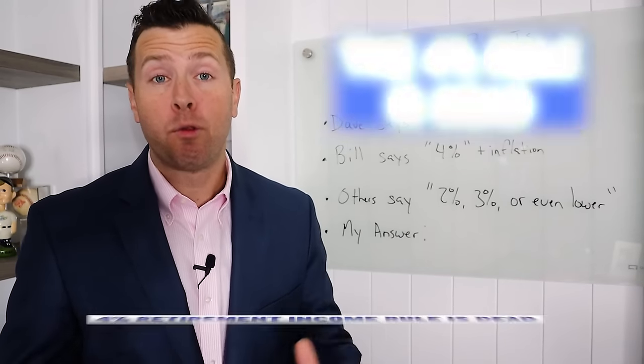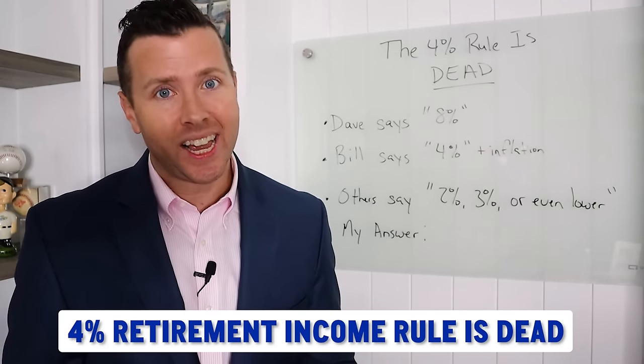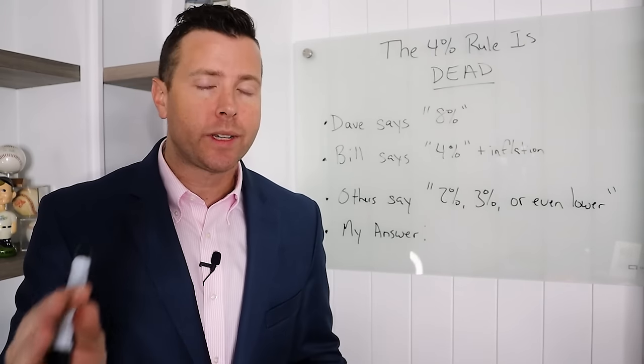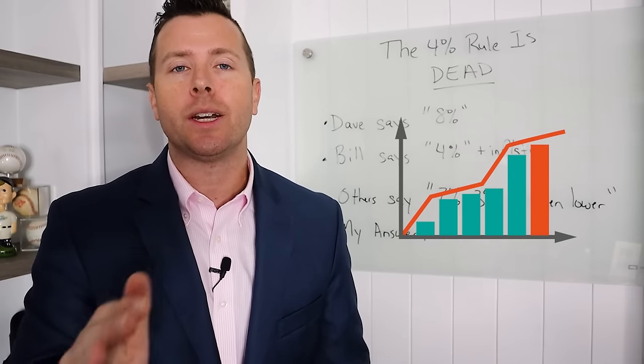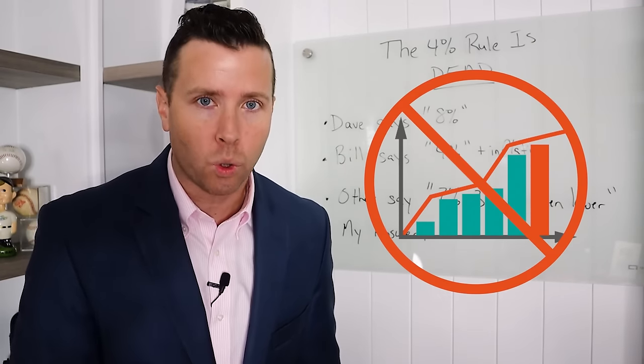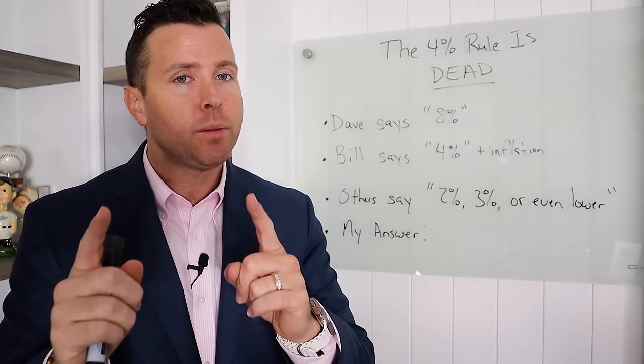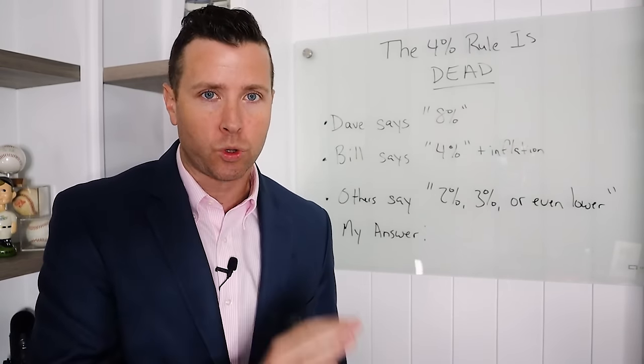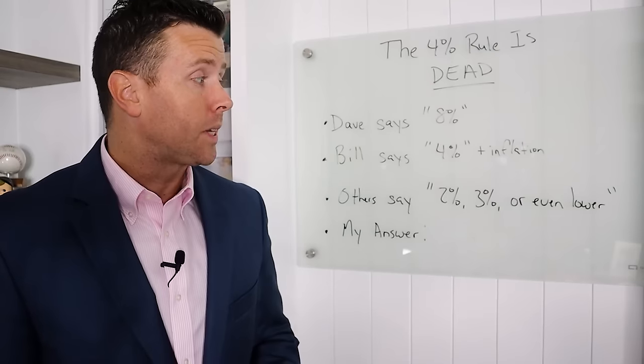The 4% rule is dead. The 4% retirement income rule is dead. Yes, you heard me right. The 4% plus inflation retirement rule championed by the financial industry is absolutely dead. Dead as a doornail. And I'm going to explain to you exactly why and how you need to be thinking differently about your retirement income withdrawals, especially once you step into retirement.